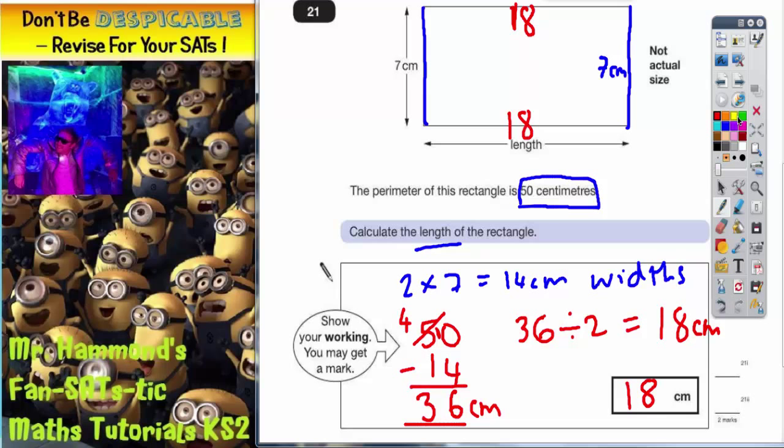With this question, you should really perform a quick check. And you could do 18 plus 18 plus 7 plus 7. Let's quickly check that. 8 and 8 is 16. Plus 7 is 23. Plus 7 is 30. Put your 0 in, carry your 3. 1 plus 1 plus 3 is 5. So that does indeed make 50. So we know that 18 is correct.